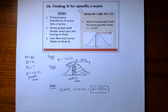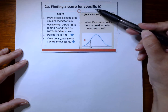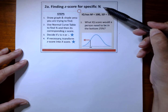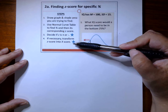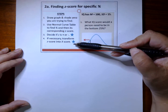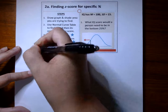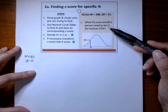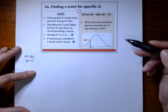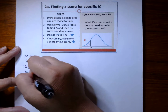Now let's move to our second scenario: finding a z-score for a specific percentage. This scenario is asking you to do the reverse — now you will use the percentage to find the corresponding z-score. These are the four steps to use. We're still using IQ with a mean of 100 and an SD of 15. What IQ score would a person need to be in the bottom 25%? In other words, what x-score represents the bottom 25%?